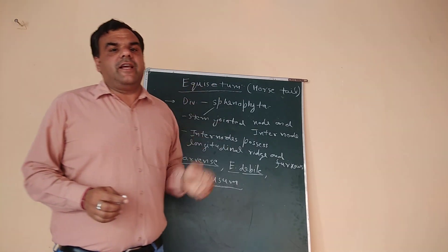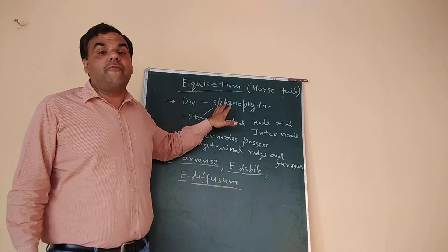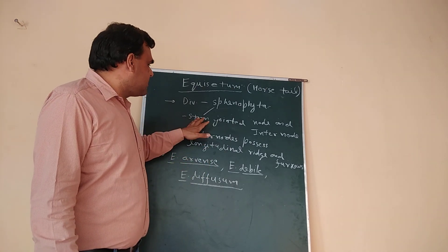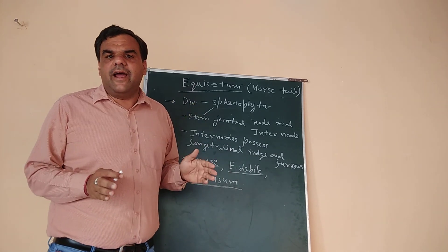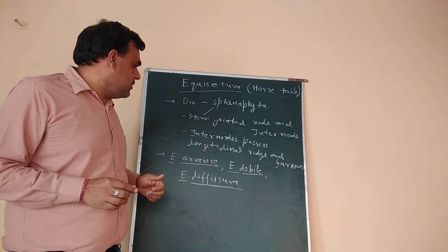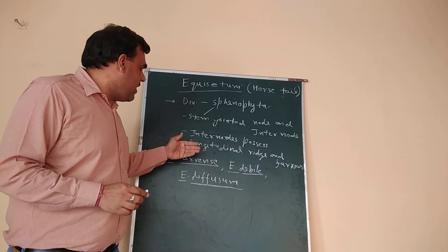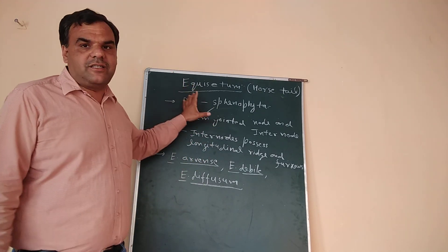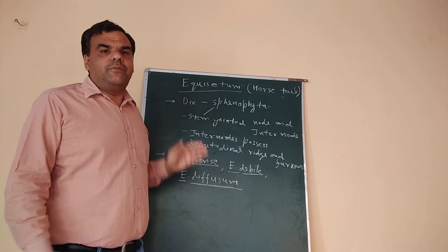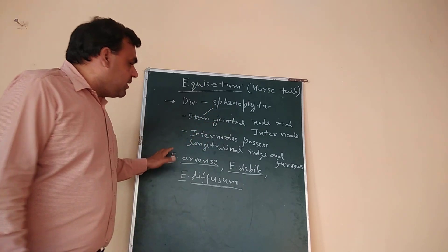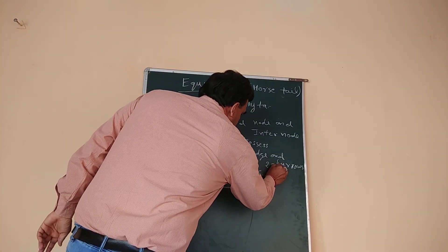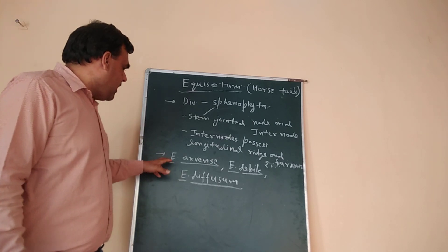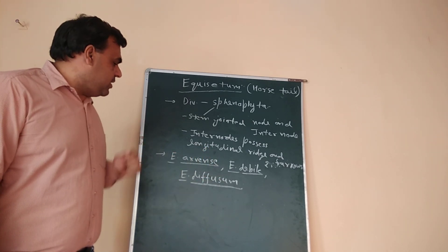Equisetum is the single living genus present in the division Sphenophyta. Sphenophyta are pteridophyte plants which have jointed stems, differentiated into nodes and internodes. The internodes of these stems possess longitudinal ridges and furrows. Total 25 species of Equisetum are found all over the world. The most common species found in India are Equisetum arvense, Equisetum debile, and Equisetum diffusum.